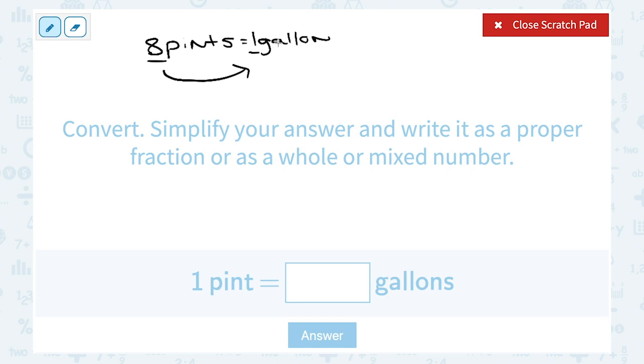If I was going in the other direction, if I knew the gallons and I wanted to know the pints, I would have to make my number bigger to get from one to eight, so I would be multiplying. So in this case, I want to divide, so I have one pint, I'm going to need to divide that by eight to get my gallons.